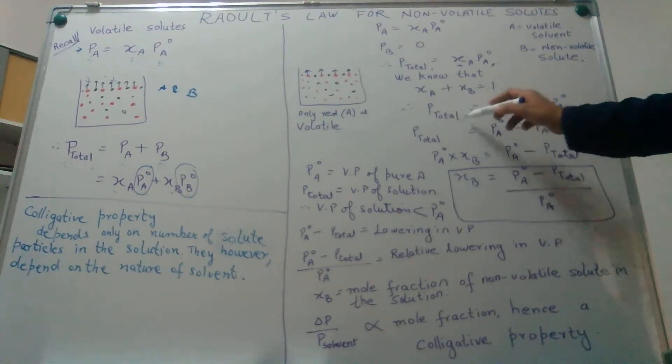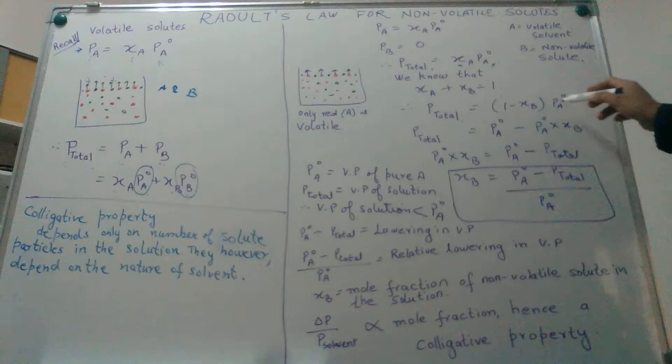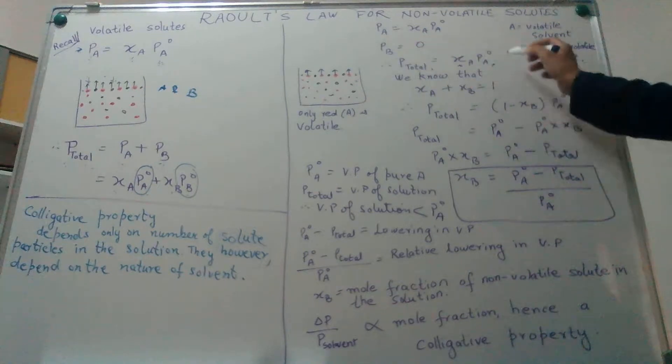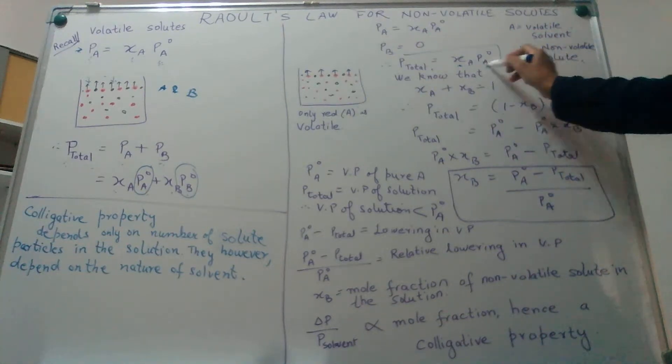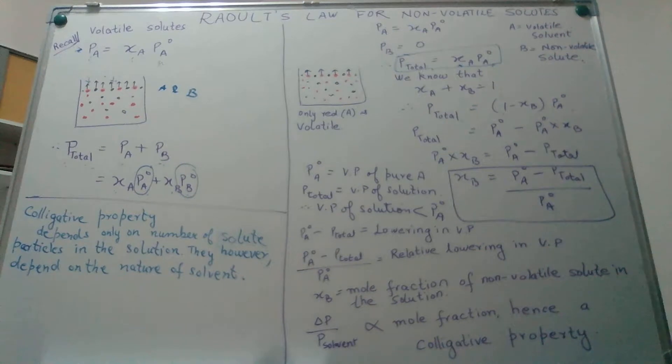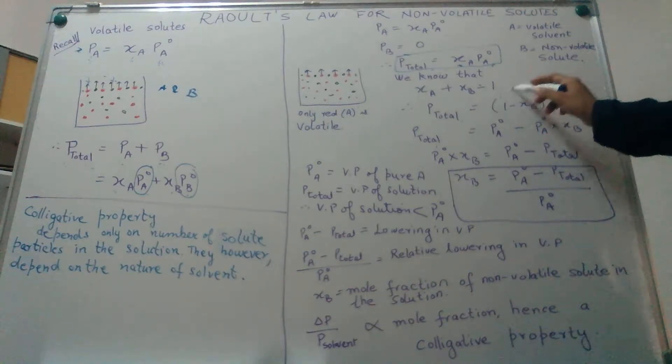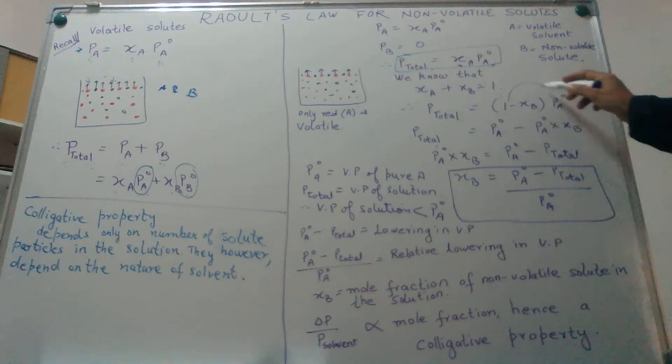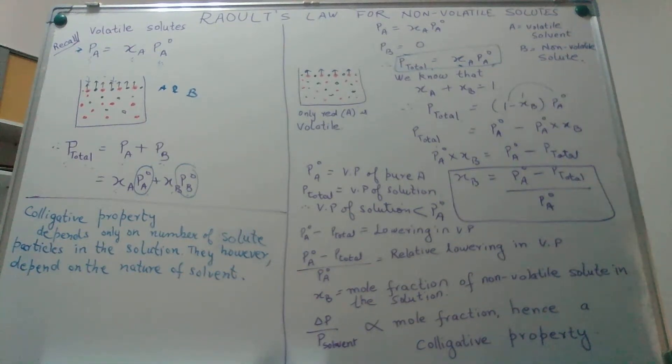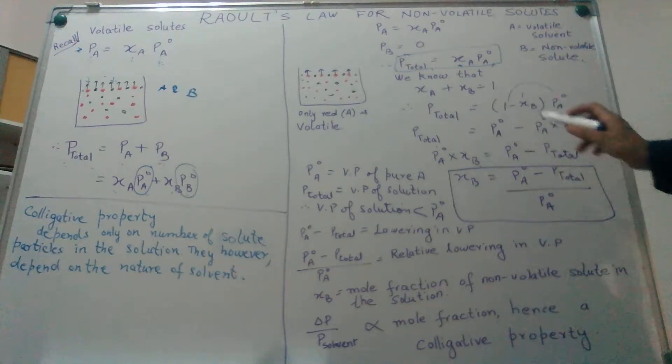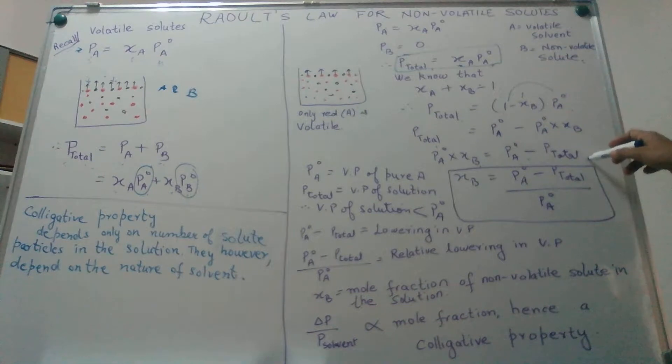So P total is 1 minus xB into Pa0. You must be wondering why we are doing this, why are we complicating this simple equation that we have got. We shall come to this point later on. So we have P total multiplied: Pa0 minus Pa0 into xB. Pa0 minus xB into Pa0 is Pa0 minus P total.